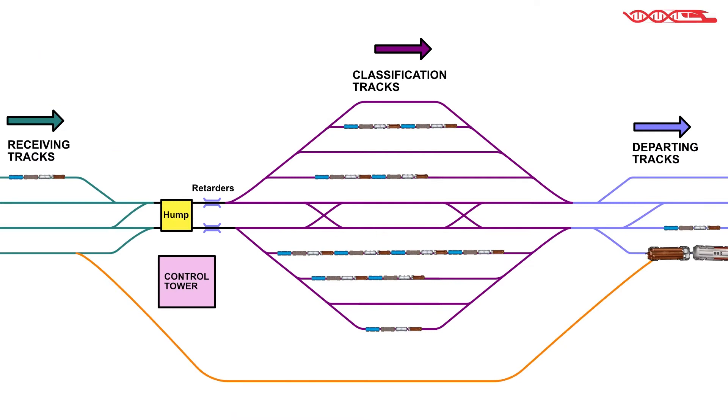If some of the rail cars are not properly classified, it is possible to pull them back for re-humping. Re-humped rail cars are moved to receiving tracks in some of the cuts and then humped again to the classification tracks.